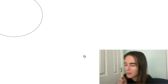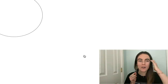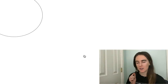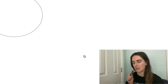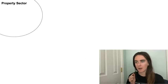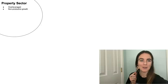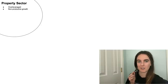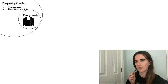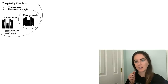So let's get into the PowerPoint. First, you have the property sector — all the real estate companies in China building out homes, infrastructure, and property. These are very over-leveraged with a ton of debt and a lot of non-productive growth, building ghost buildings that just sit there. One of these property sector companies is Evergrande, which is a very big company with quite a lot of debt.